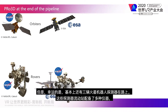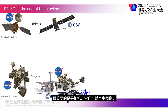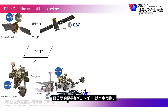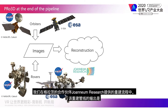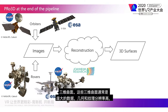These rovers are equipped with several instruments, most importantly cameras as they produce images. These images are then fed into the reconstruction pipeline provided by our partner Johann Neum Research in Graz. The output of this reconstruction pipeline are 3D surfaces.